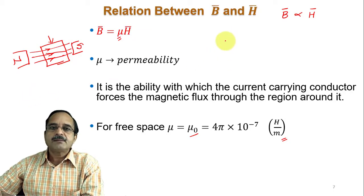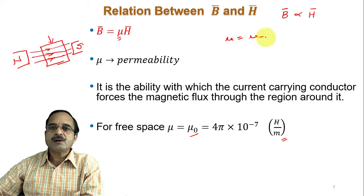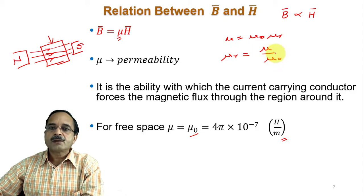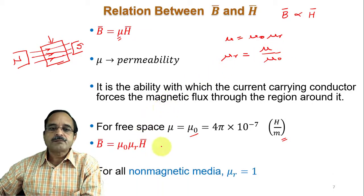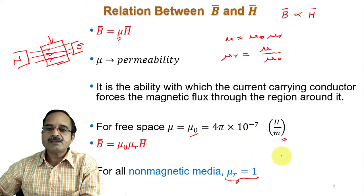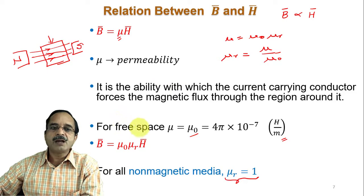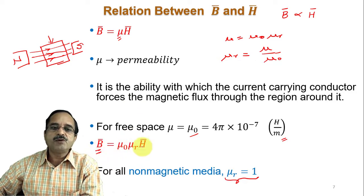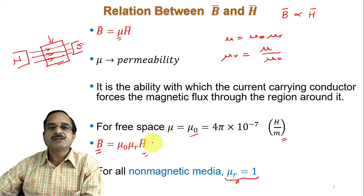In general, permeability mu equals mu-zero times mu-r, where mu-r is the relative permeability — the ratio of mu to mu-zero. For non-magnetic materials, mu-r equals 1. For magnetic materials, mu-r is very high; for iron, it may be in the range of a few thousands depending on the purity of the material. Therefore, B equals mu times H, that is mu-zero times mu-r times H.